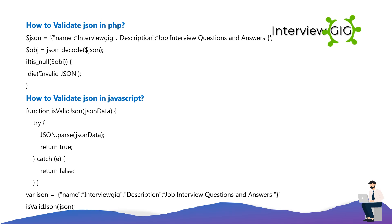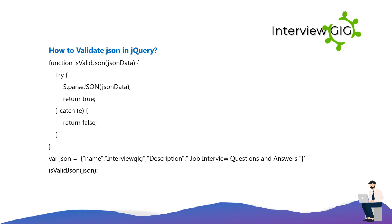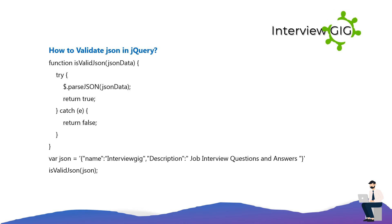How to validate JSON in jQuery: function isValidJson(jsonData) { try { $.parseJSON(jsonData); return true; } catch(e) { return false; } } var json = '{"name":"InterviewGig","description":"Job Interview Questions and Answers"}'; isValidJson(json).